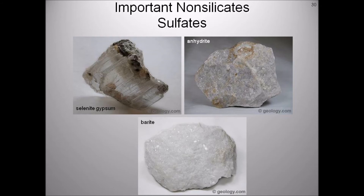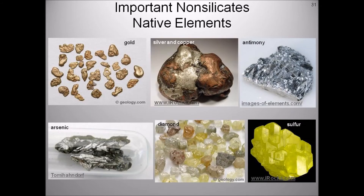Some 20 elements occur in nature in a pure elemental form, known as the native elements. They are partitioned into three families: metals, semimetals, and non-metals. The common native metals, which are characterized by simple crystal structure, are gold and silver. Two examples of native semi-metals are antimony and arsenic, and two examples of non-metals are diamond and sulfur.